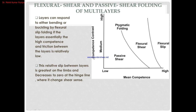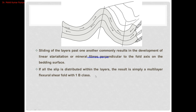As shown in a diagram of competency contrast versus mean competency contrast: when mean competency contrast is high, we get flexure slip type of mechanism; at intermediate competency contrast, we get flexure shear; in passive shearing, mean competency contrast is very low. Ptygmatic-type folds occur at high competency contrast and intermediate mean competency. Sliding of layers past one another commonly results in the development of linear striations. When multi-layers are compressed, layers slide against each other, producing flexure slip movement and Class 1b type of folds.